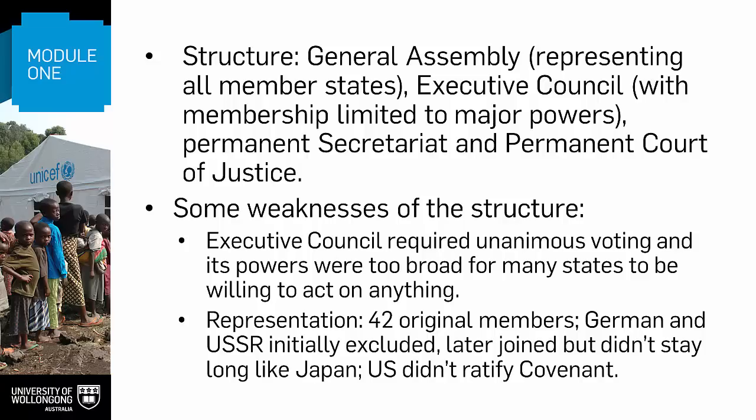Further, the Council's powers were too broad for many states to be willing to act on anything. Representation was also an issue. There were 42 original members, with Germany and the USSR initially excluded. The USSR joined in 1934 but was expelled in 1939. And Germany joined in 1926, but both it and Japan left in 1933, followed by Italy in 1937. The US, despite being a key party in the League's establishment, didn't join as the Congress didn't ratify the League of Nations covenant.